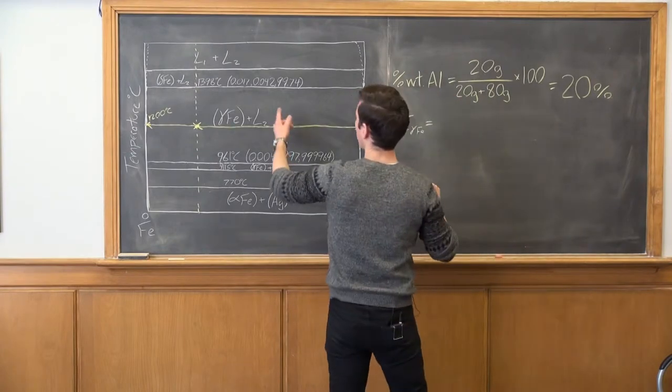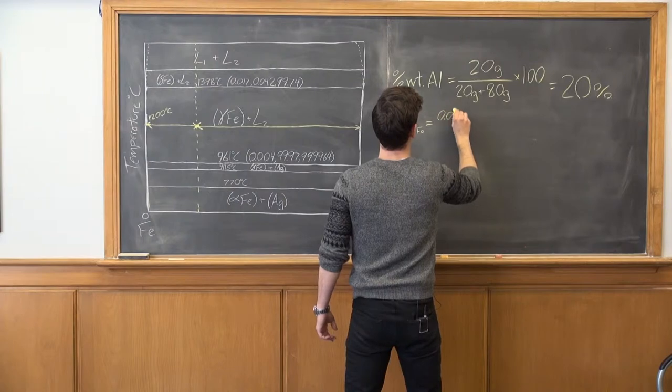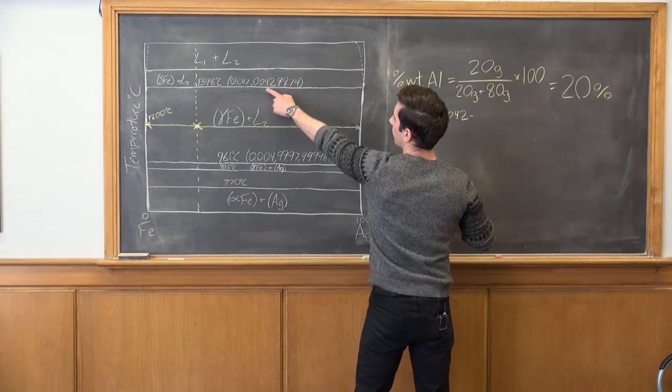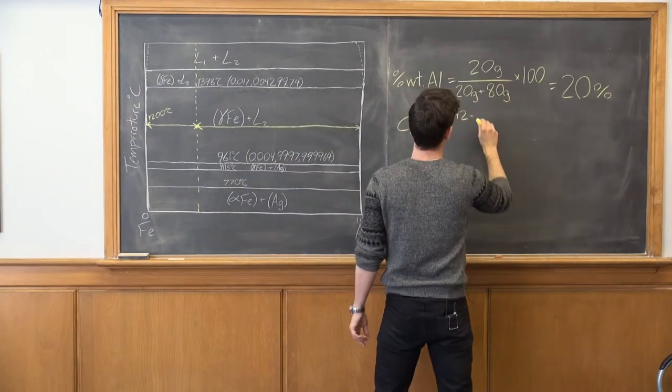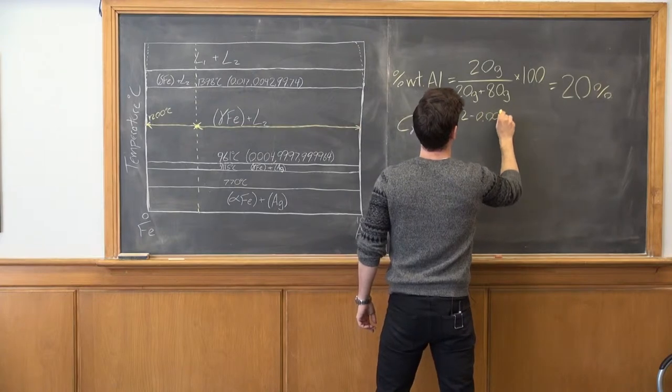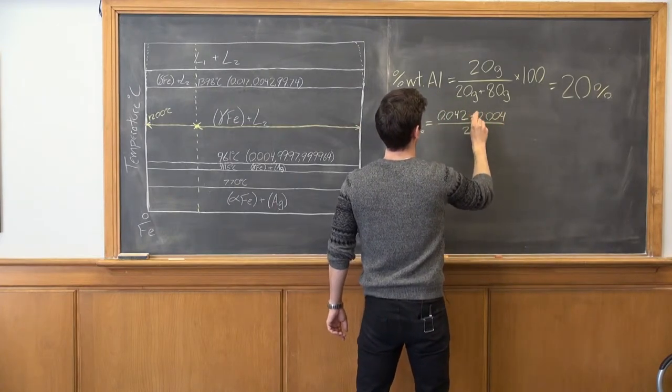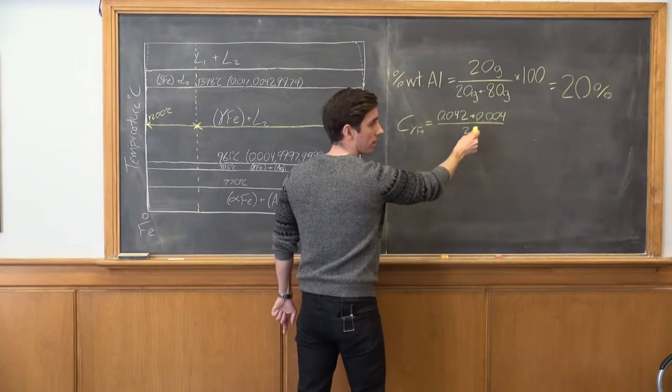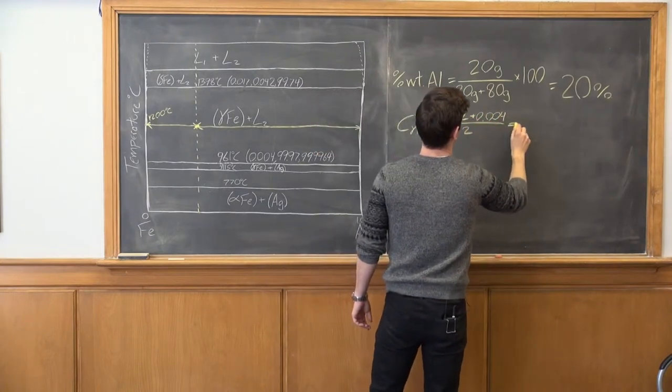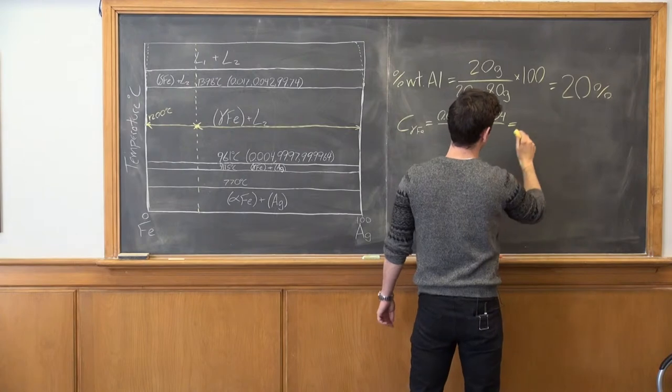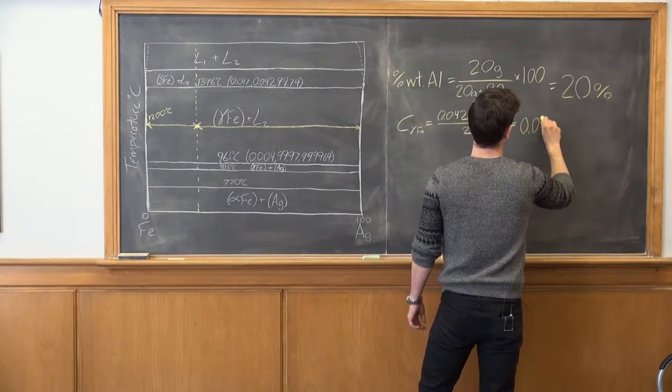This one is going to equal 0.042 plus 0.004 and I'm going to take the average, so I'm going to divide by 2, and that is going to equal 0.023.